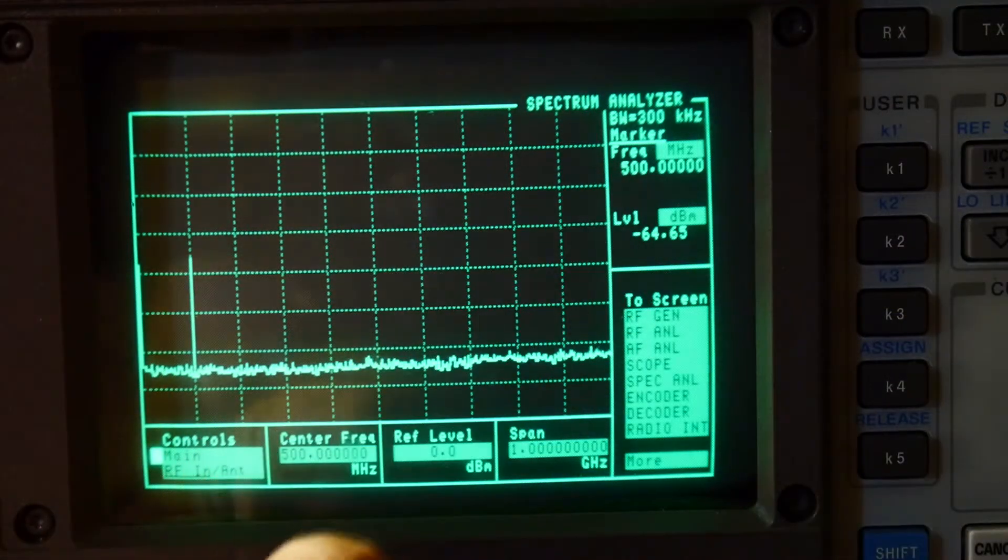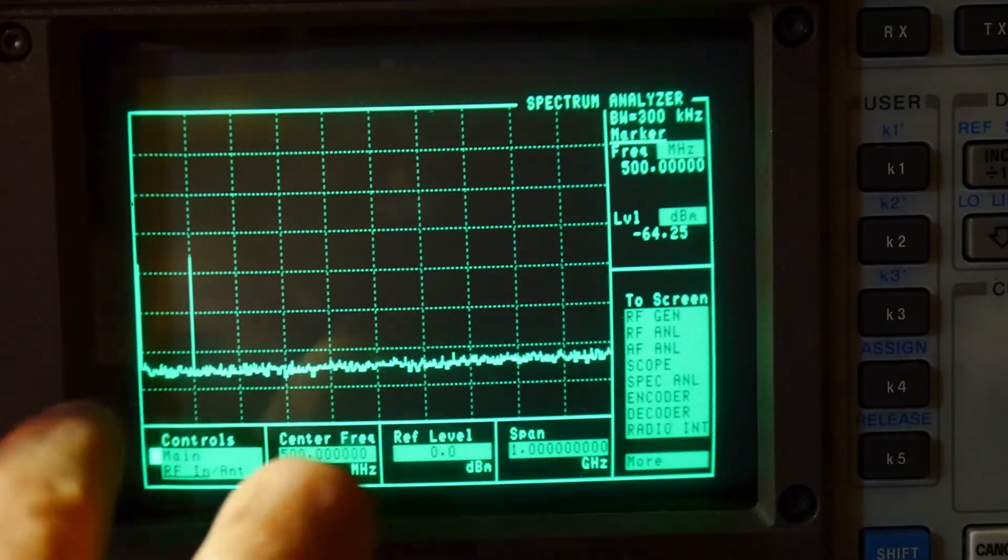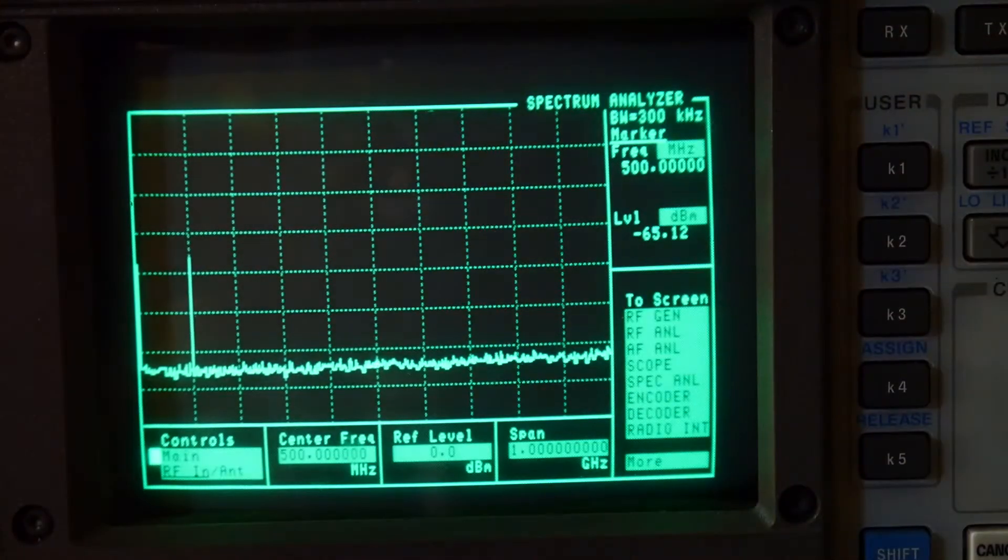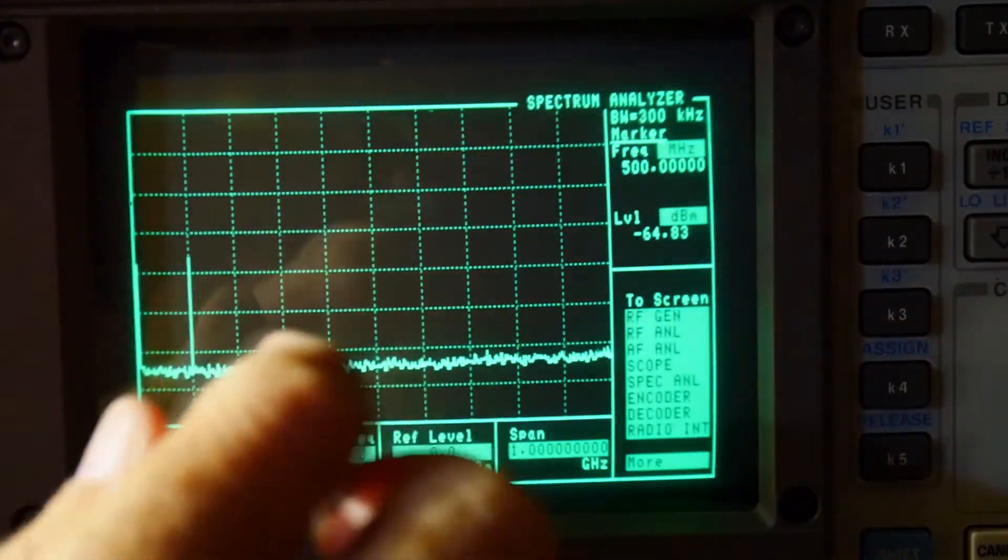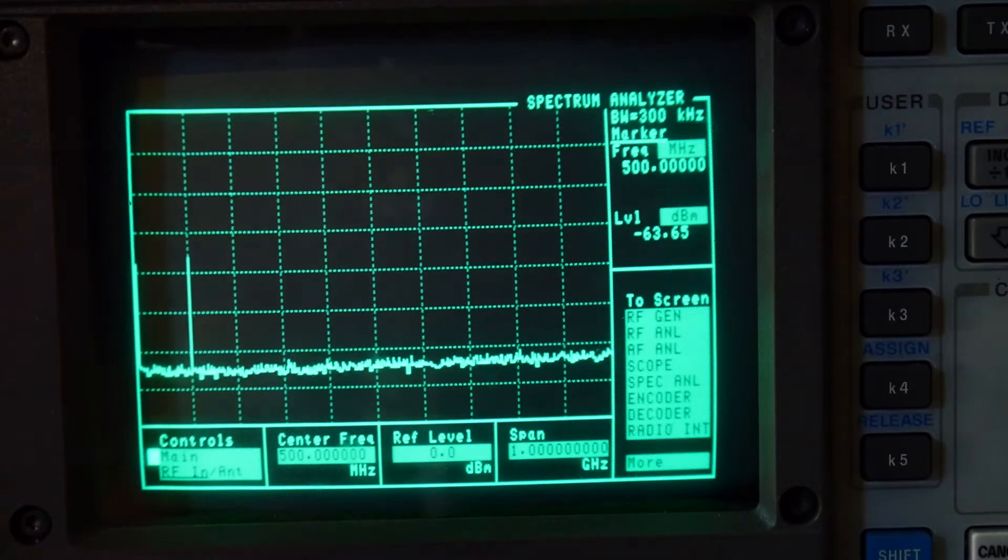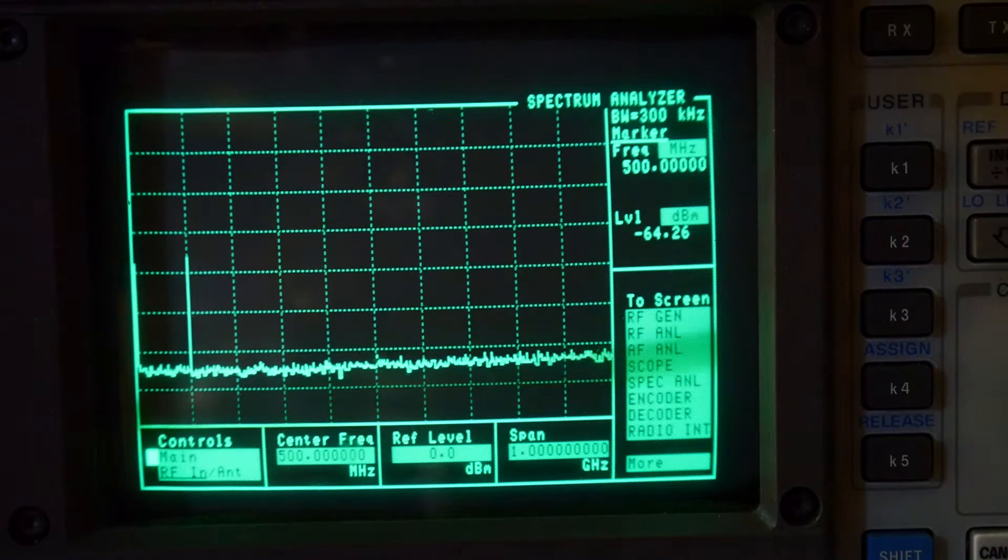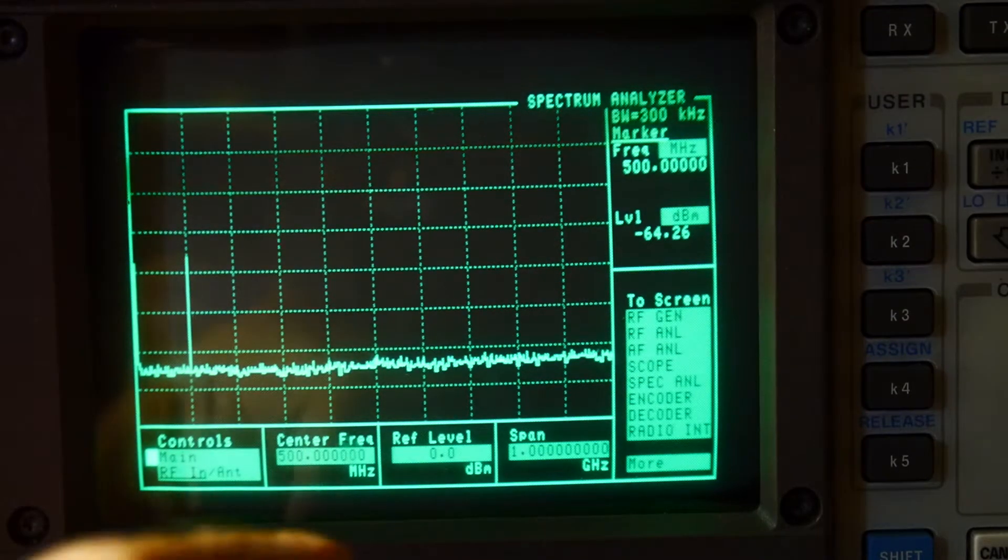Okay, we have the spectrum analyzer for a center frequency of 500 megahertz and a span of 1 gigahertz. That's as much as this spectrum analyzer will do. So we're looking at the entire spectrum that this analyzer can see, and there's nothing on the BNC right now. So let me connect the noise source and we'll see what we see.